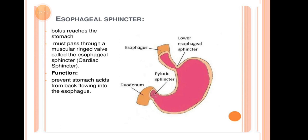Food must pass through a muscular ring valve called the esophageal sphincter. As you can see in the image, between the last part of the esophagus and the opening of the stomach, the esophageal sphincter is found. It acts like a cap — when food comes, it opens; once food is inside and the bolus has entered, it closes.